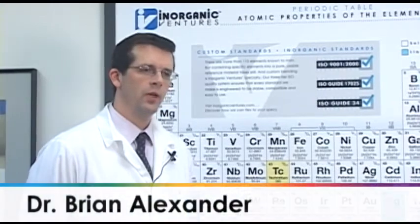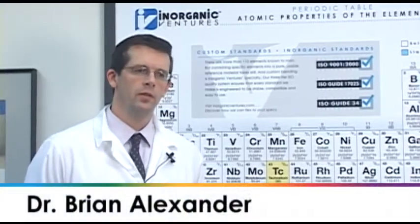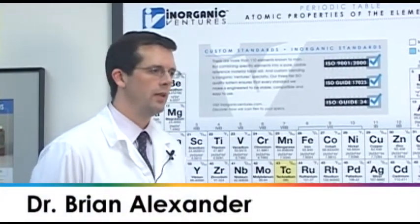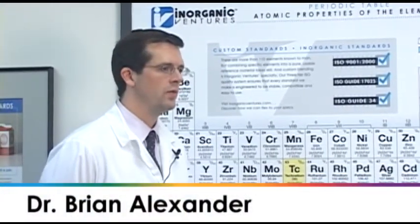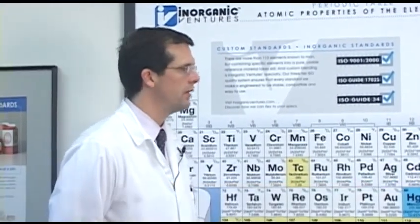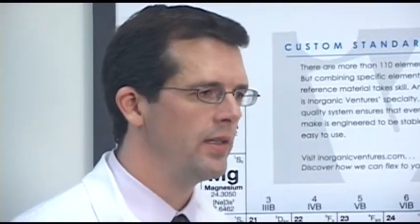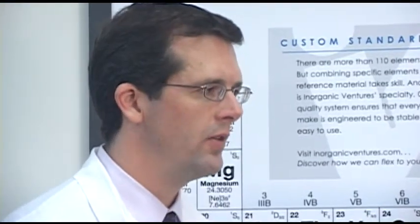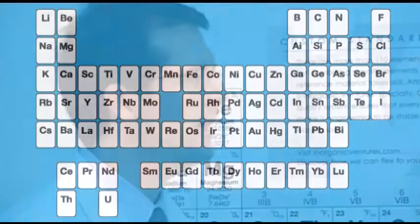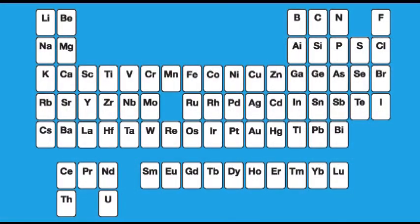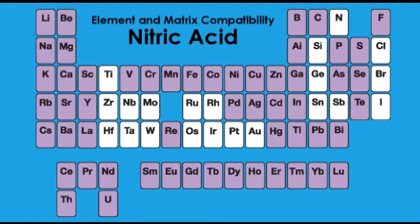We receive a lot of requests for people who want to do trace measurements for elements such as arsenic and selenium. Nitric acid has a great advantage over hydrochloric acid in that it does not produce any argon chloride interferences with ICP-MS measurements that would be typical when using hydrochloric acid.